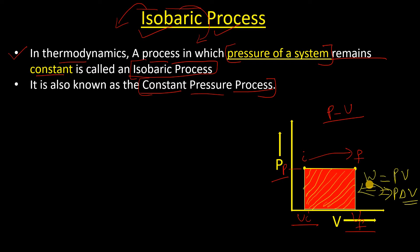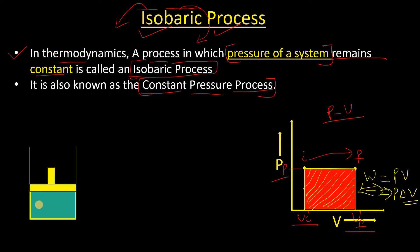Now we will see a realistic example of the isobaric process. Here is my system — there is a gas in the system held by a piston. This piston has a mass M. The piston is massless or frictionless, and the pressure P is exerted by the gas molecules on the piston upward. There is also atmospheric pressure acting downward on the piston.